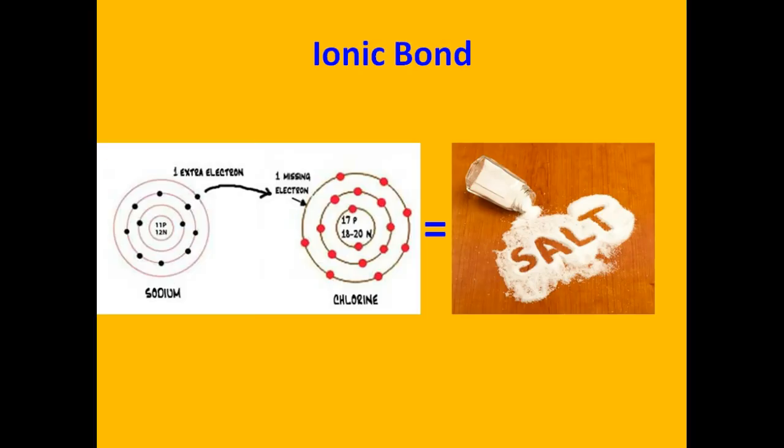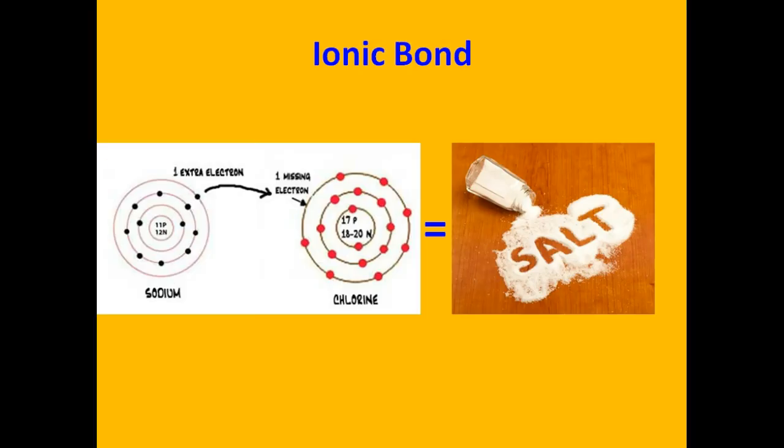A great example of this is when sodium combines with chlorine. You can see that sodium loses one of its electrons. Chlorine gains that electron, and the result that you get is sodium chloride. We know that as table salt.